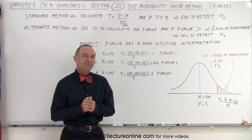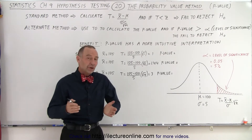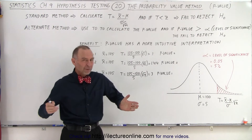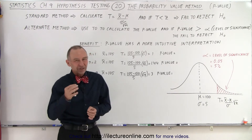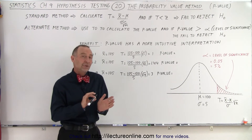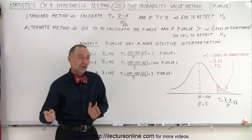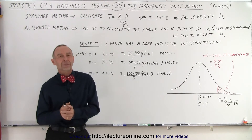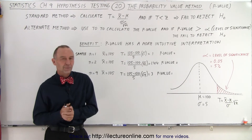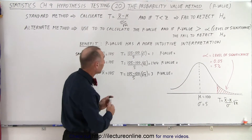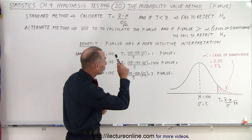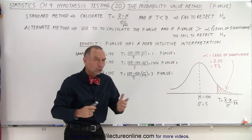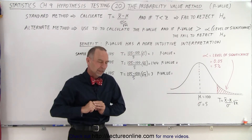Welcome to our Lecture Online. So far in this series of videos, we've been using the test statistic to determine if we should reject a null hypothesis or not reject a null hypothesis. But there's an alternate method. That alternate method is called the probability value method, or also called the p-value method.